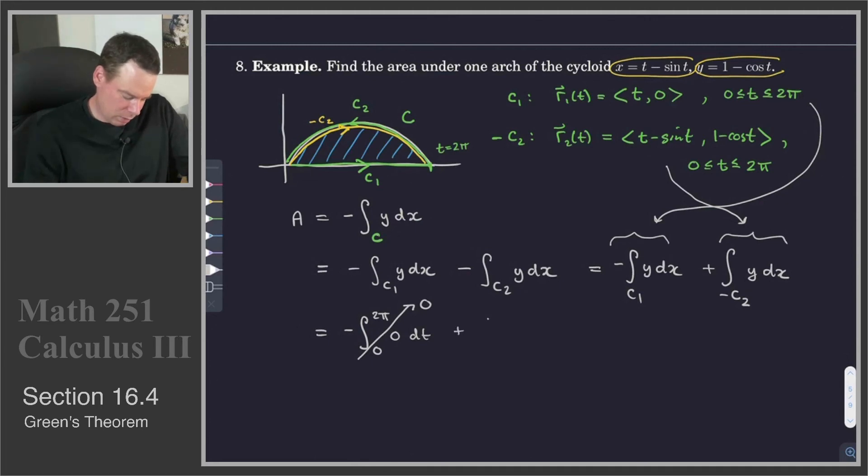And then that leaves me with the integral along negative C2. Negative C2 goes from 0 to 2 pi. y is going to be the 1 minus cos of t function. And then I've got dx. dx is the derivative of the x component. And so t minus sin t is the x component. So I'm looking right here. t minus sin t is the x component. Its derivative is 1 minus cos of t dt.